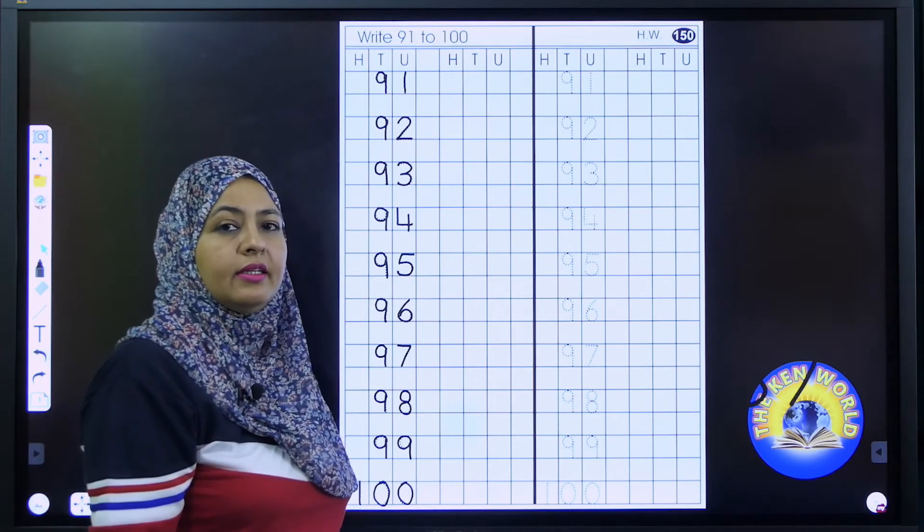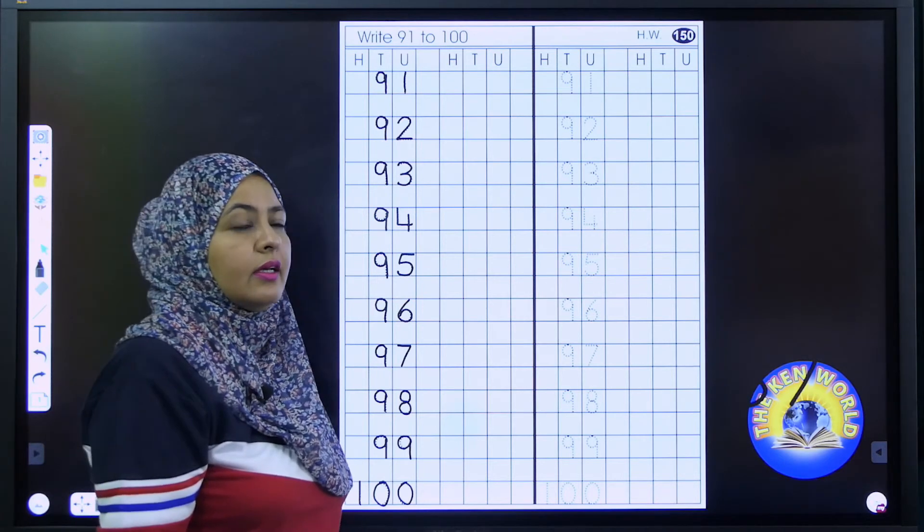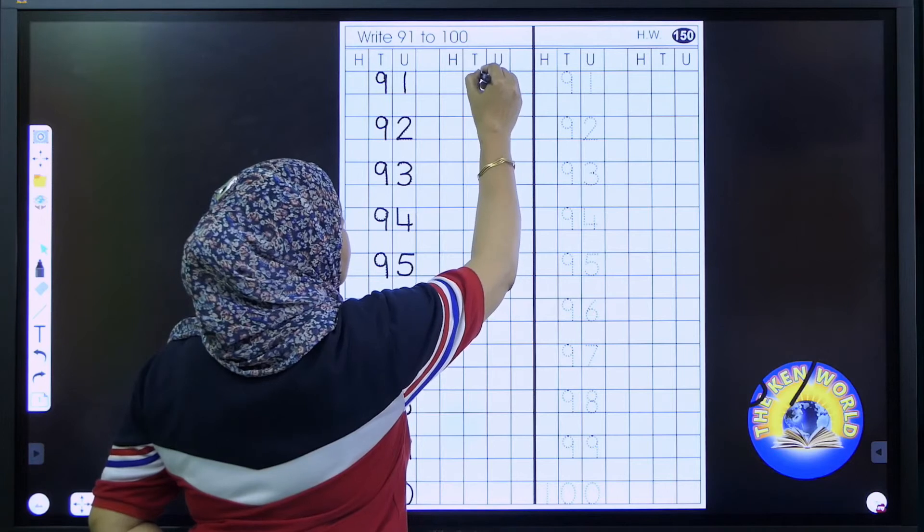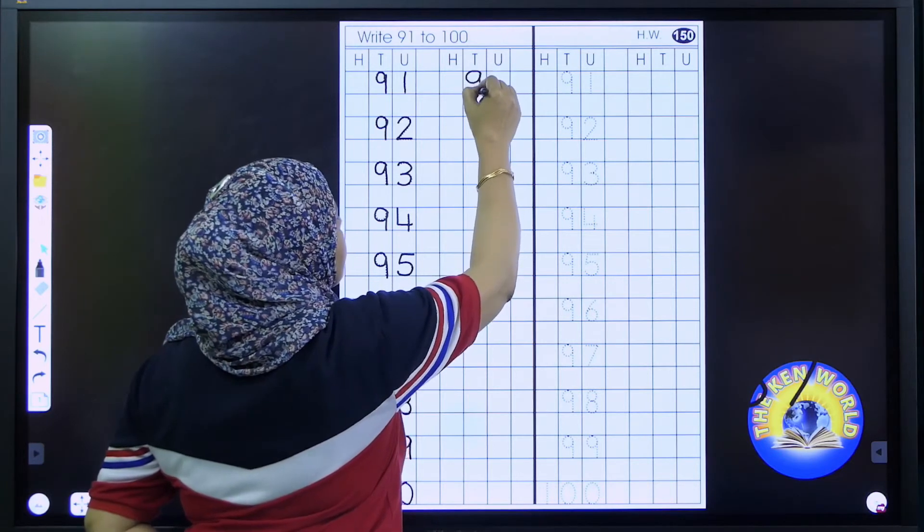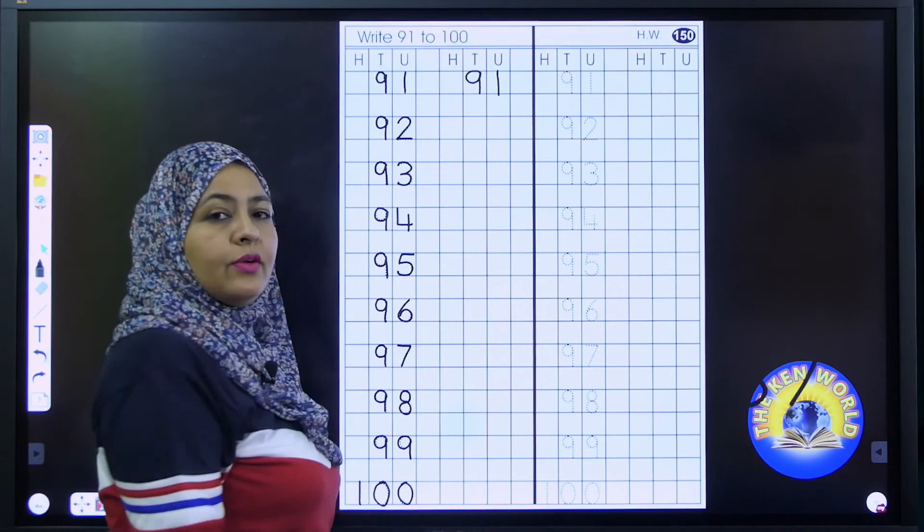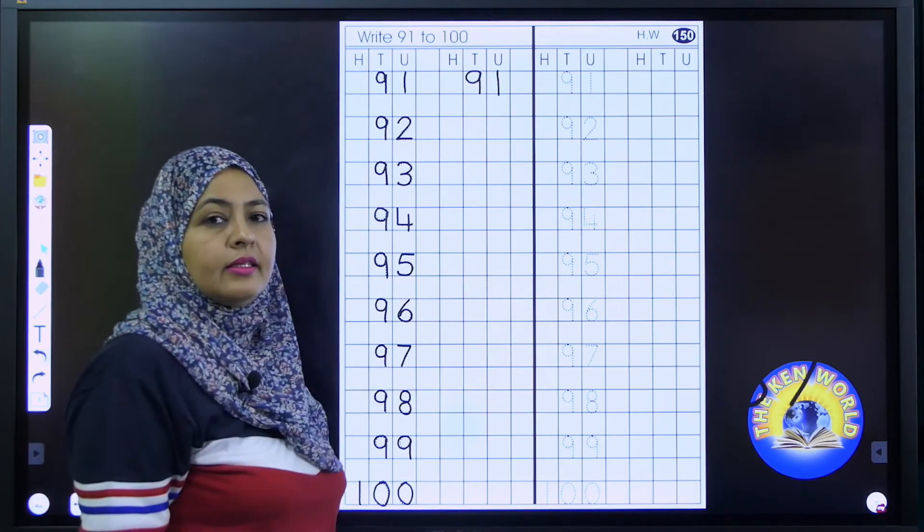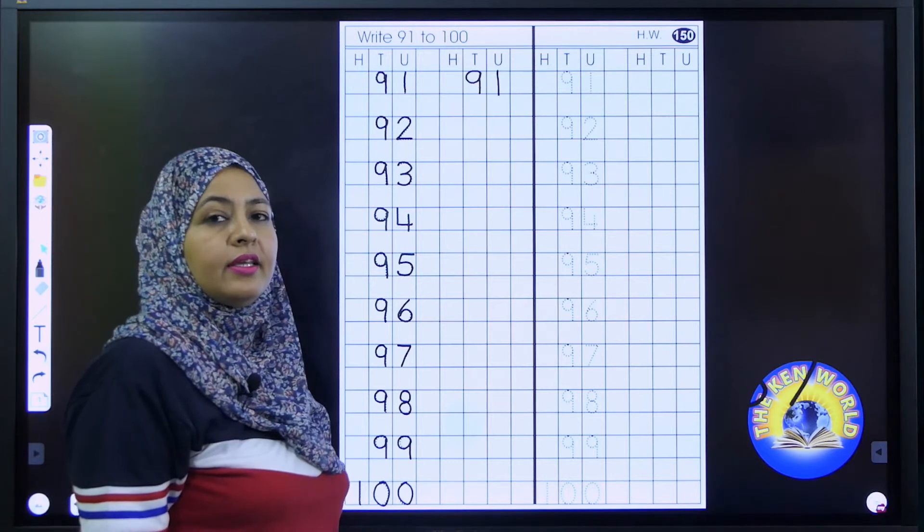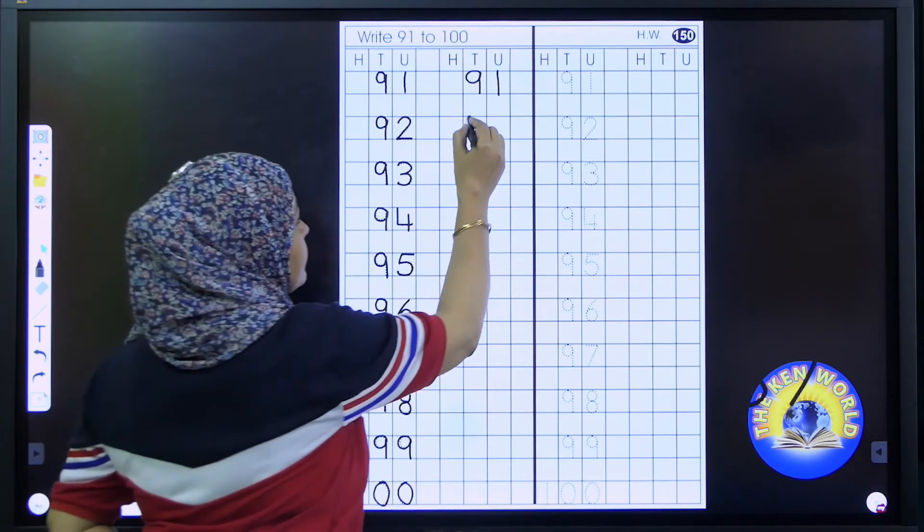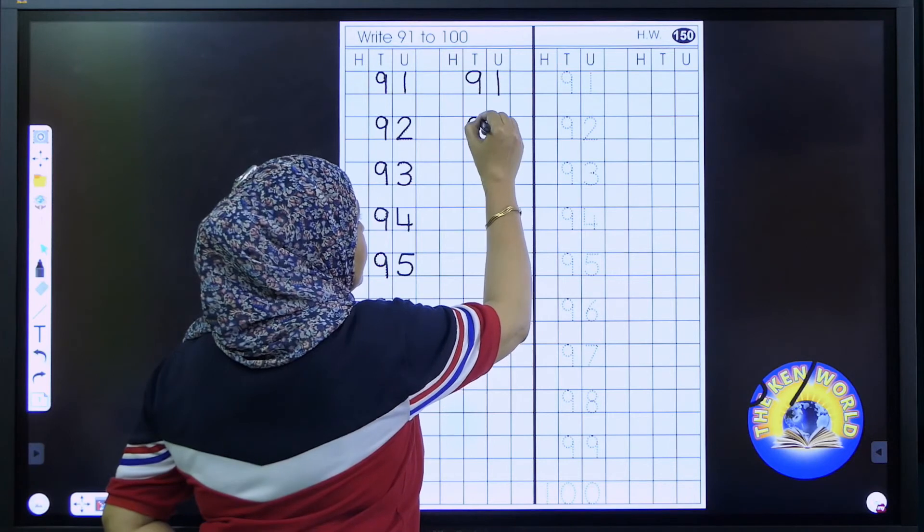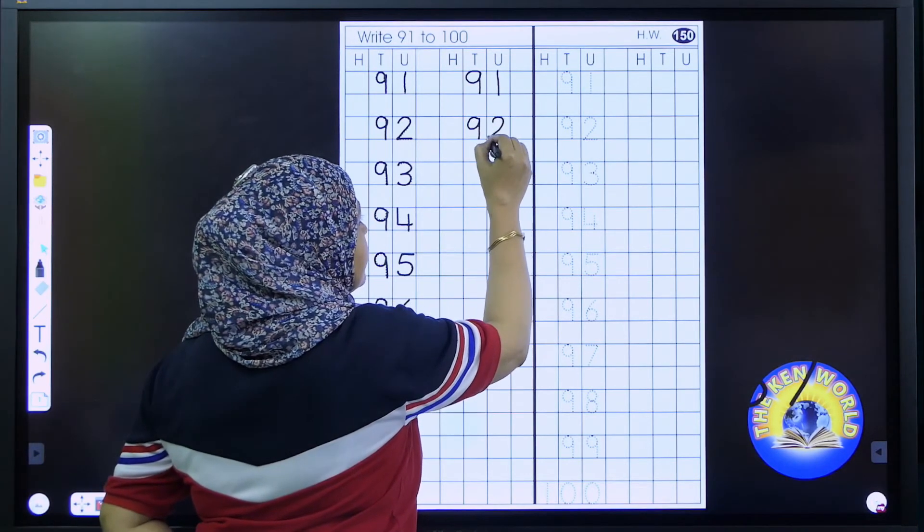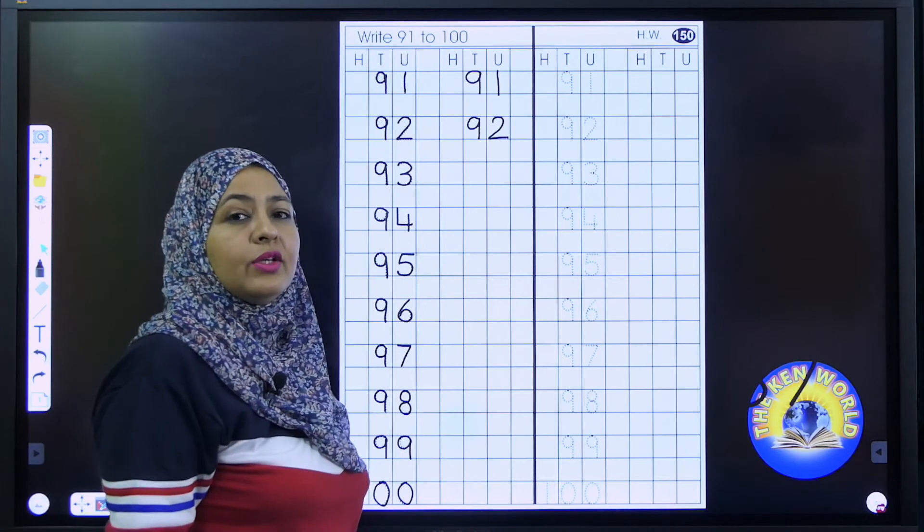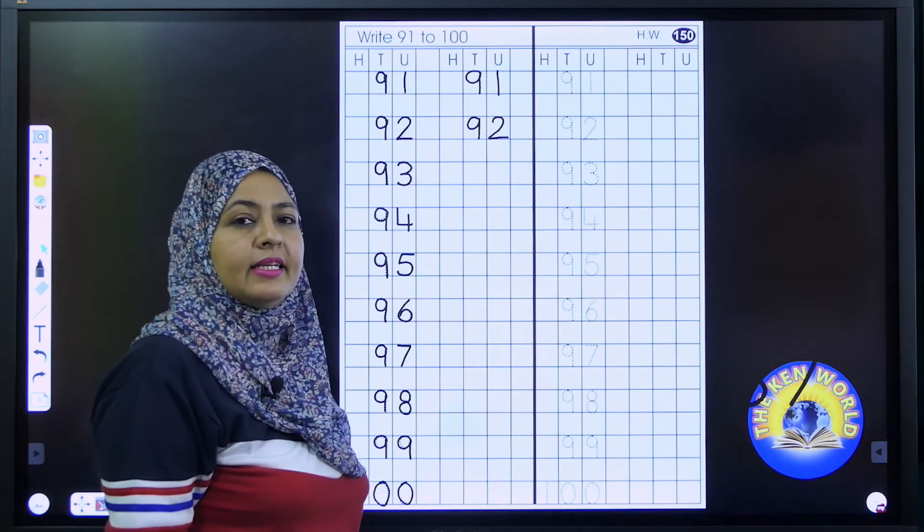Have you all done? Very good. Now write 9, 1, 91. 91. The next number is, speak out. Very good. 92. 92. 92. If you made wrong, use eraser. You have to write neat and clean.